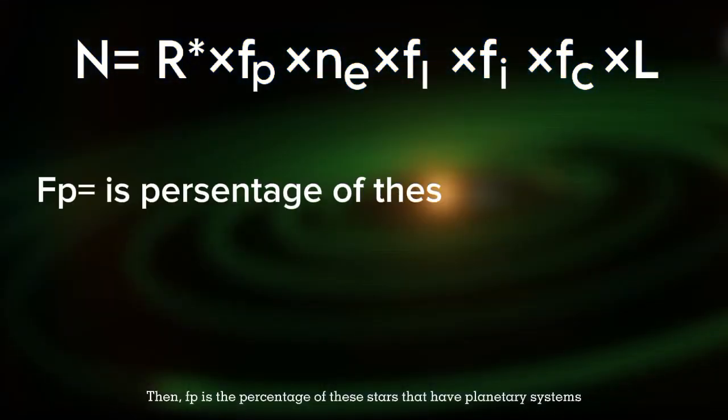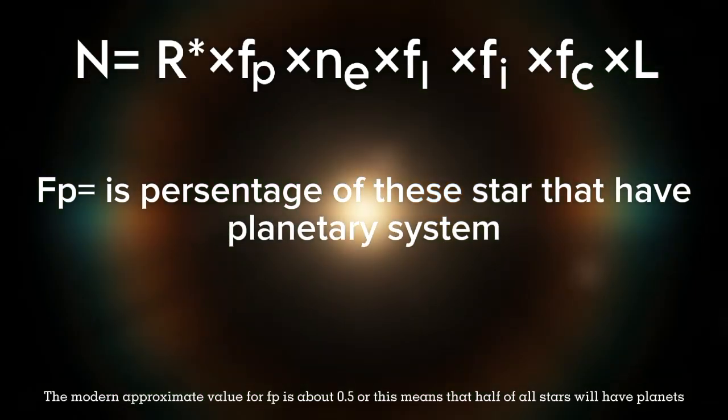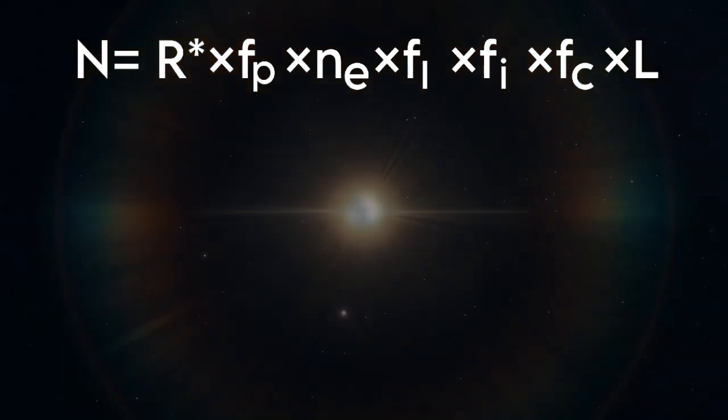Then, fp is the percentage of these stars that have planetary systems. The modern approximate value for fp is about 0.5, or this means that half of all stars will have planets.